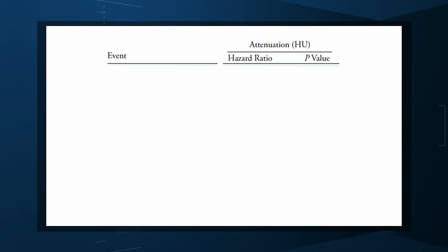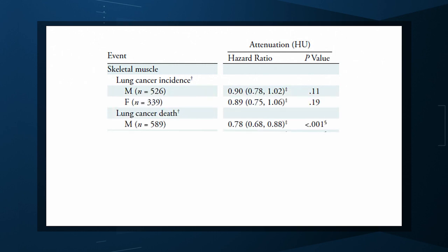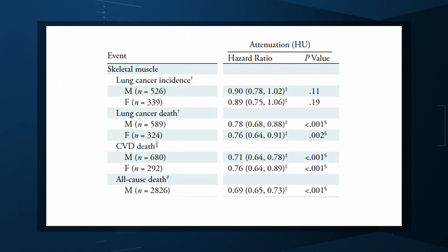Even after adjustment, skeletal muscle attenuation was significantly associated with all-cause mortality, cardiovascular mortality, and lung cancer mortality, but not lung cancer incidence. Those results tell us that there is likely a physiologic significance to skeletal muscle attenuation and provide a great proof of concept that automated data extraction techniques can be applied broadly to routinely collected radiology images. That said, in terms of actually predicting outcomes, adding this information to a model containing just clinical factors like age and diabetes doesn't actually improve things very much.